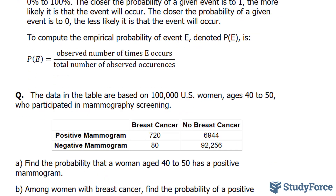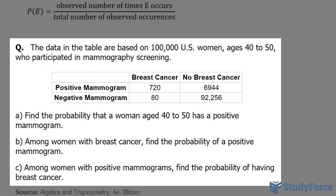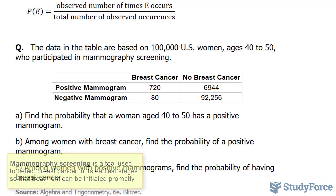The question we're answering in this video is based on data from 100,000 U.S. women ages 40 to 50 who participated in a mammography screening. The first row is for positive results and the second row is for negative results.